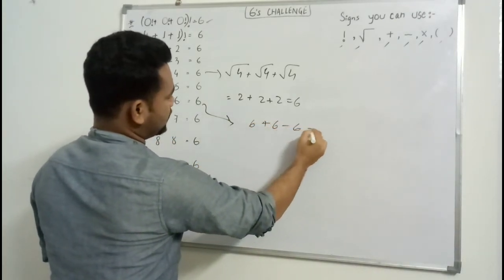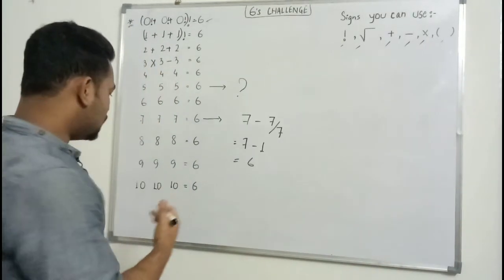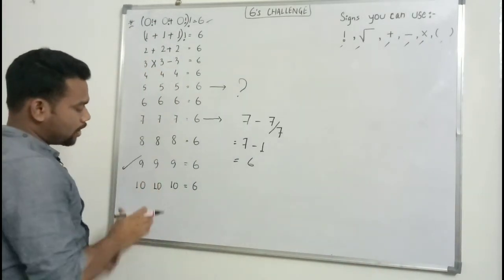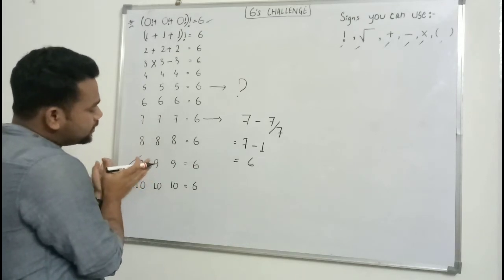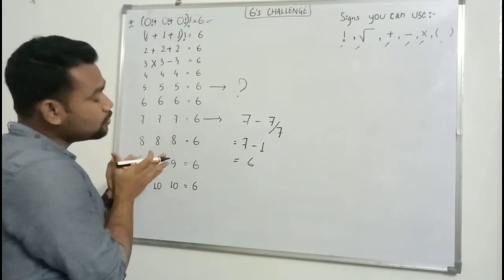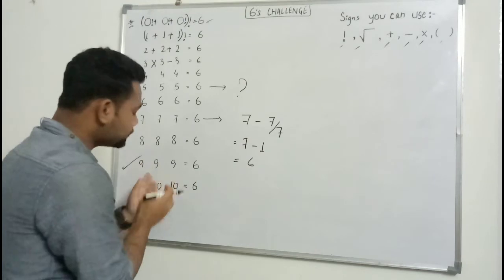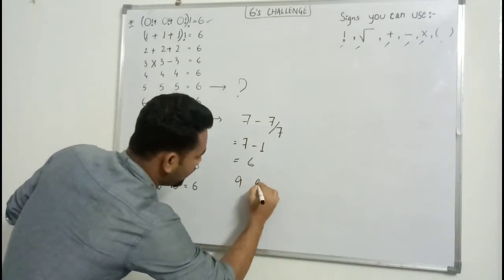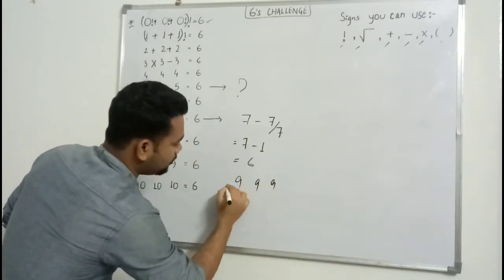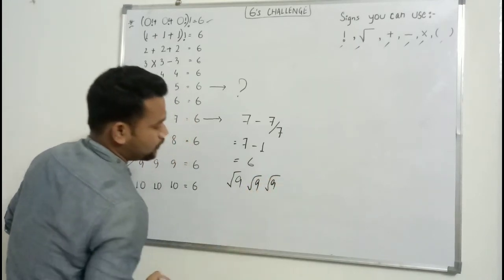Now let's go for nine. How we can convert this nine nine nine into six? Let's go for it. If I put root on nine, it becomes three three three.